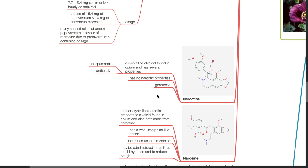Noscapine is a crystalline alkaloid found in opium and has several properties such as antispasmodic and antitussive actions. It has no narcotic properties. It is genotoxic.